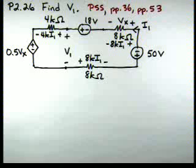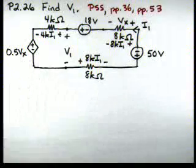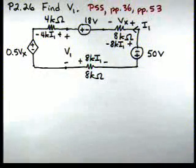Step three of that problem-solving strategy on page 36 says apply KVL to the single-loop circuit. So now we're ready to apply KVL. If we look at step one of the problem-solving strategy on page 53, it says when writing the KVL equation, treat the dependent source as though it were an independent source.